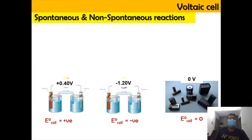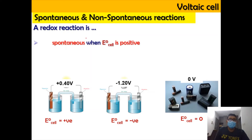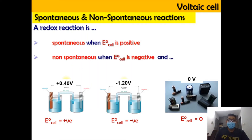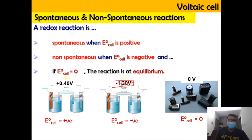Now we look into spontaneous and non-spontaneous reactions. A redox reaction is spontaneous when the E0 cell is positive — the reaction can occur without any external energy. However, when the E0 cell is negative, the reaction is non-spontaneous and requires extra energy, such as plugging in a battery. If the E0 cell is zero, the reaction is at a state of equilibrium.